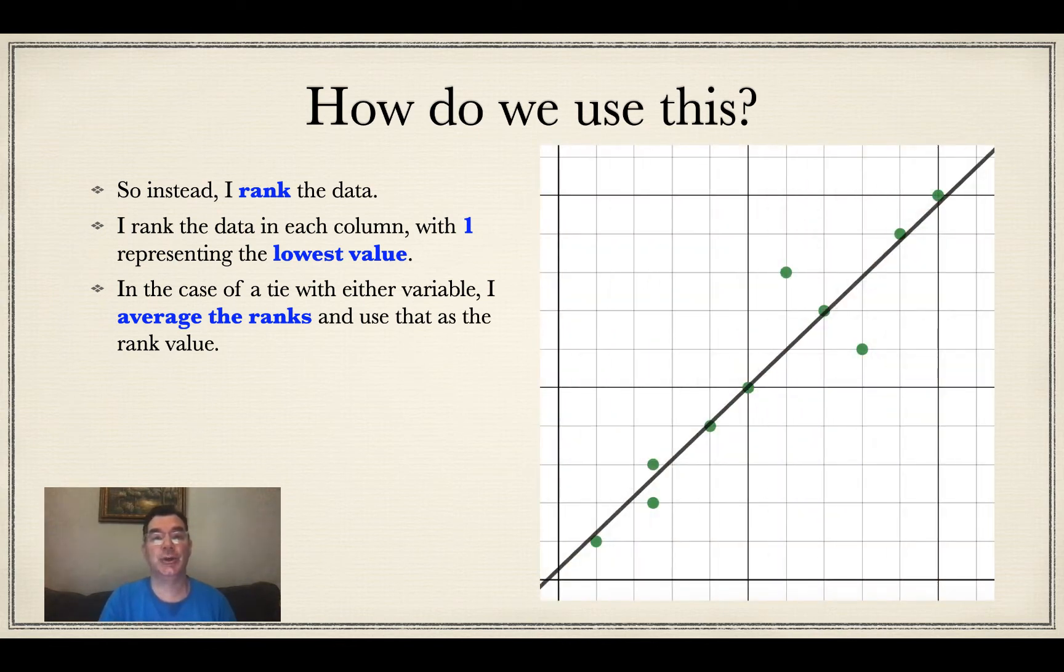So now what I do is I use those ranks as my new x's and new y's in the same order that they were before, and I completely ignore the original data. I just graph the ordered pairs of the ranks of the x's and y's, and that is the scatter plot that I get, and that is the line of best fit that I get.